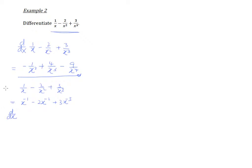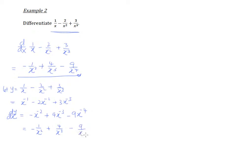We let y equal to this expression to make our presentation easier, so we write dy/dx. The dy/dx will then be: we bring down the negative one, giving us negative x to the power of negative two. This becomes positive four x to the power of negative three, and this becomes negative nine x to the power of negative four. Changing back to fraction form, we get negative one over x squared, plus four over x cubed, minus nine over x to the power four — the same answer.